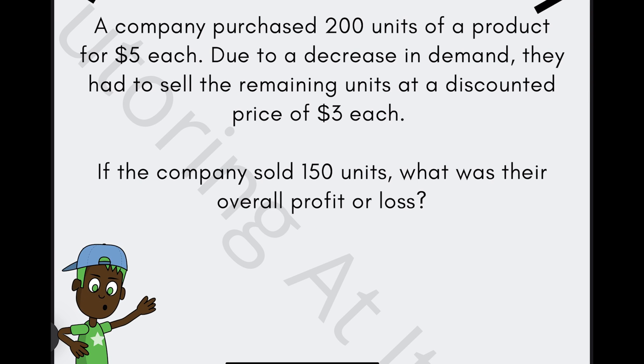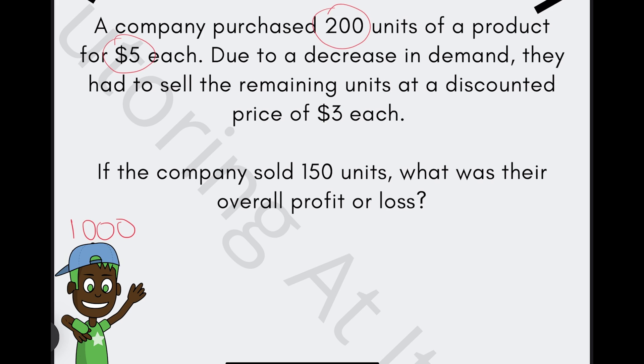Question number three. A company purchased 200 units of a product for $5 each. So instantly, we know that's 200 multiplied by five, that's $1,000 right there. Due to the increase in demand, they had to sell the remaining units at a discounted price of $3 each.